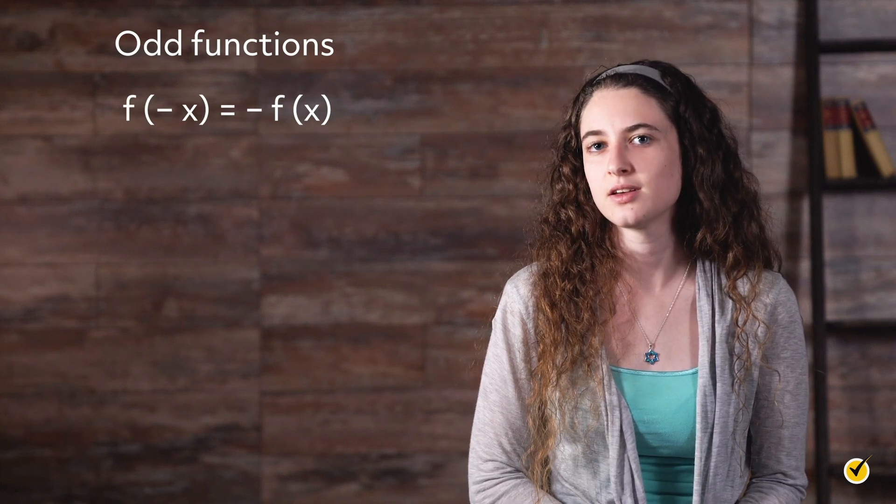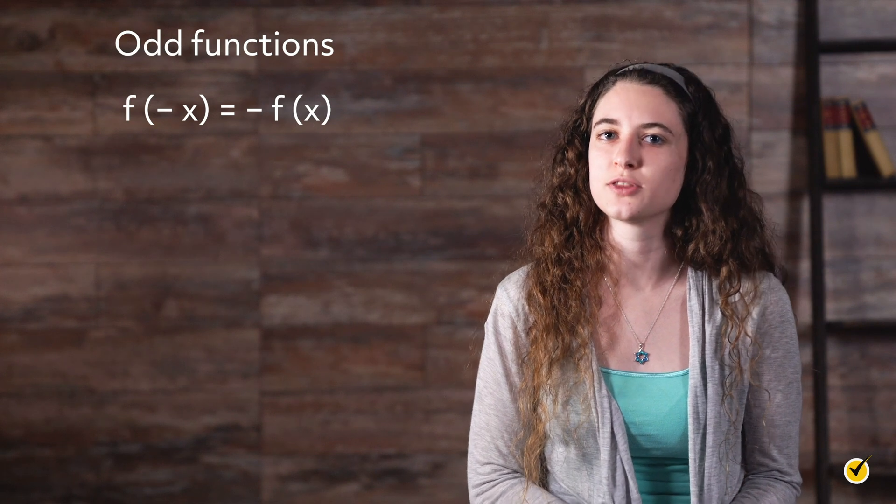Functions that are considered odd would satisfy this equation: f of negative x equals negative f of x. Odd functions have symmetry about the origin.